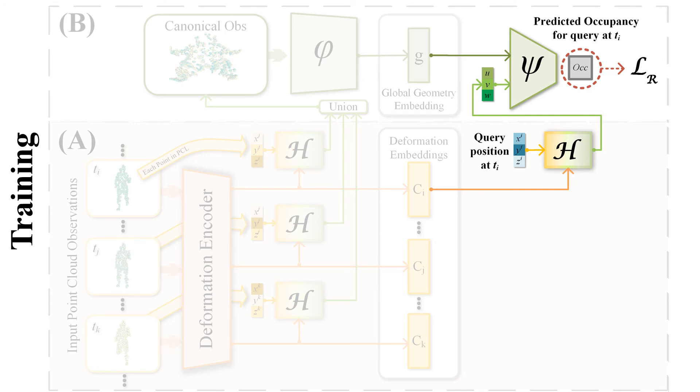The canonical coordinate is then sent to a standard occupancy network decoder conditioning on the global geometry embedding to predict the occupancy value. This prediction is supervised via a standard binary cross-entropy reconstruction loss.